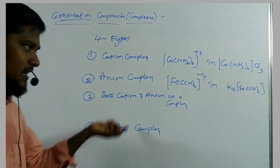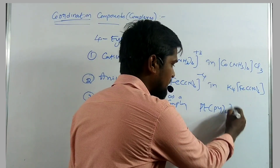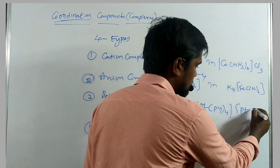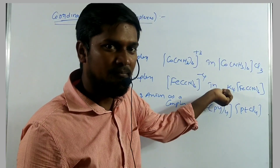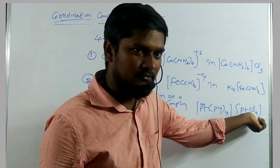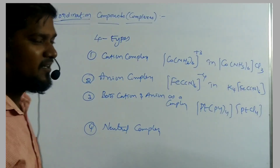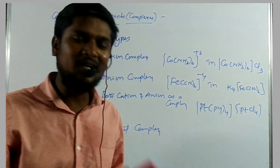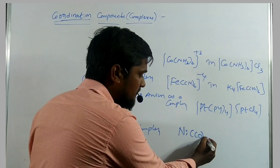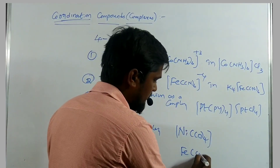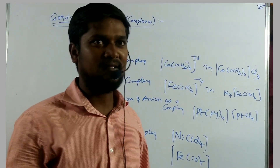The third type is both cation and anion as a complex. For example, [Pt(py)₄][PtCl₄] — where [Pt(py)₄]²⁺ is the cation complex and [PtCl₄]²⁻ is the anion complex. The fourth one is neutral complex, which does not carry any charge. The best examples are metal carbonyls: Ni(CO)₄ and Fe(CO)₅. These are neutral complexes.